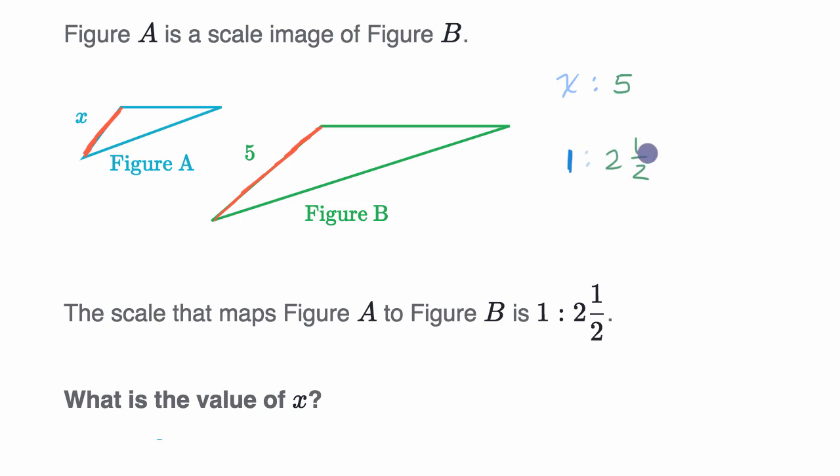To go from two and a half to five, you would multiply by two. So to go from one to X, you would also multiply by two. So the value of X is equal to two. If these are scaled up, you multiply this by two and a half, you get to five. So the scale factor is one to two and a half. Let's do another example.